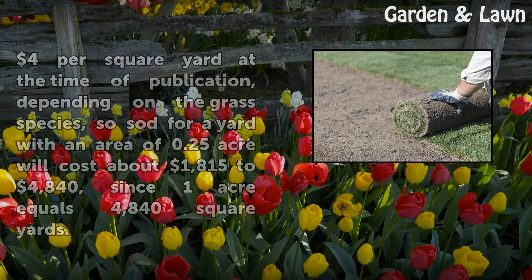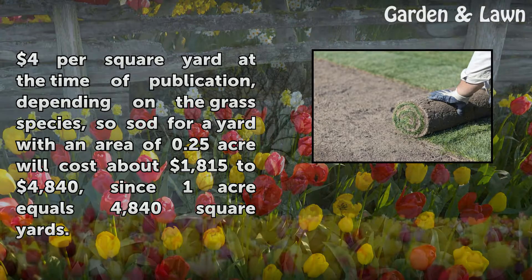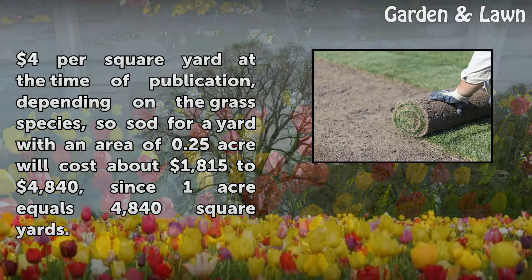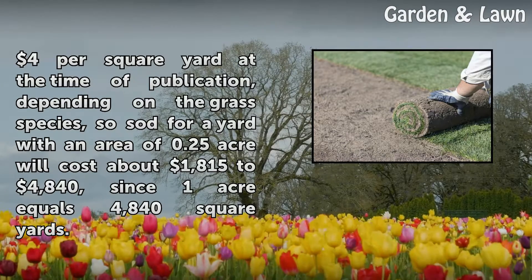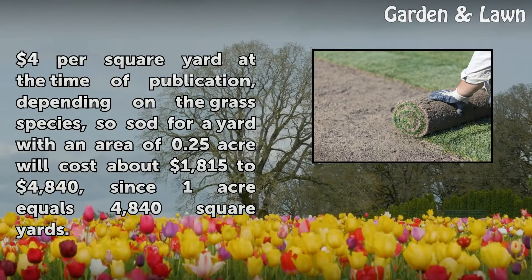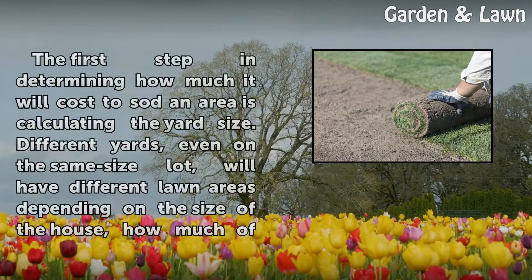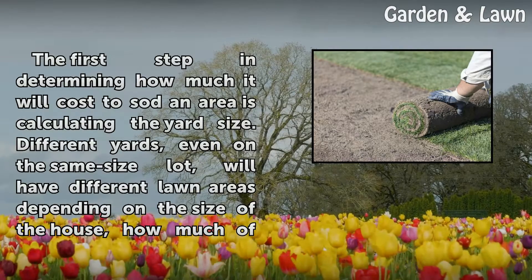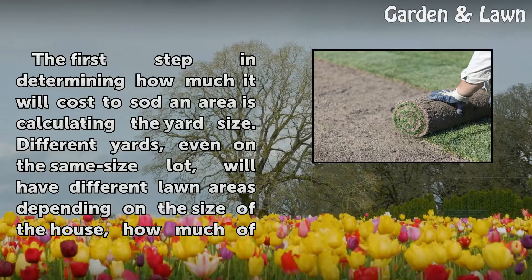Sod prices average $1.50 to $2.40 per square yard at the time of publication, depending on the grass species, so sod for a yard with an area of 0.25 acre will cost about $1,815 to $4,840, since 1 acre equals 4,840 square yards. The first step in determining how much it will cost to sod an area is calculating the yard size.